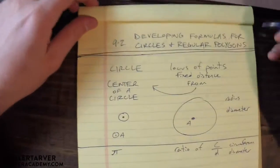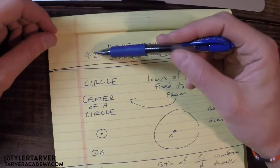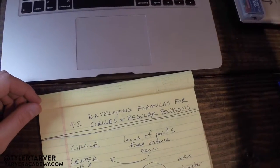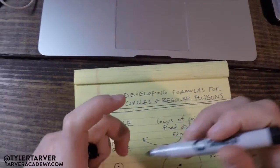Okay, so today we're working on 9-2, developing formulas for circles and regular polygons. Alright, so let's look at circles first.